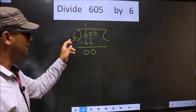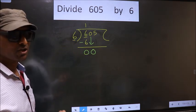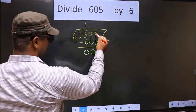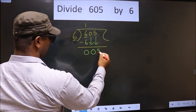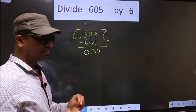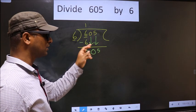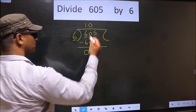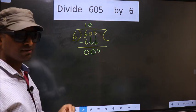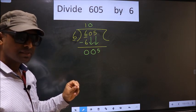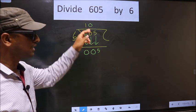0 is smaller than 6, so what we do is we bring down the other number down, that is 5 down here. Remember this point: whenever you are bringing down two numbers, then compulsory put 0 in the quotient. I repeat: whenever you are bringing down two numbers, compulsory put 0 in the quotient.